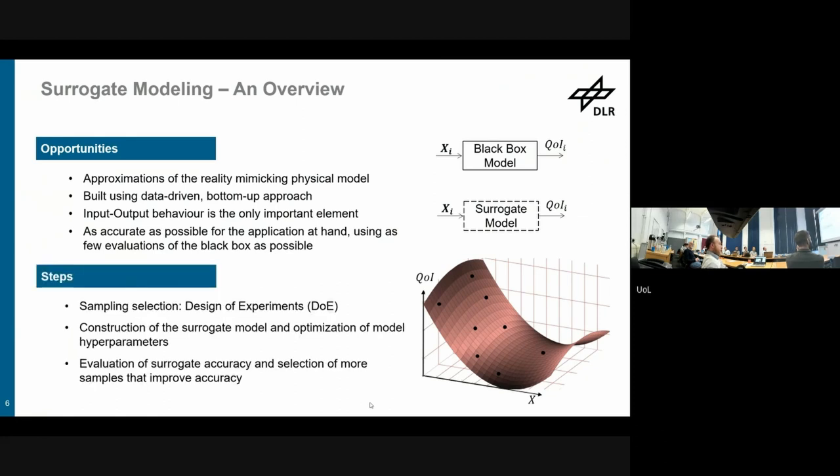So in general, surrogate construction consists out of these three steps. If you do it in a practical thing, you select some sampling locations where you actually run the full order model or the black box model, you construct the surrogate model and optimize the model using hyperparameters, nowadays also called training if you come from the machine learning world, and then you evaluate the accuracy and select some additional samples to improve accuracy, always with the goal to be as accurate as possible for your application with as few function evaluations as possible.